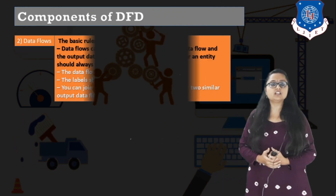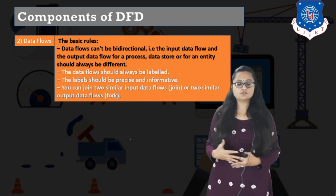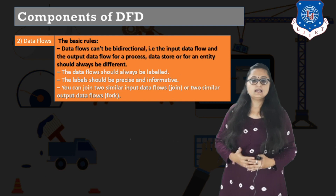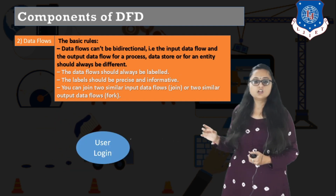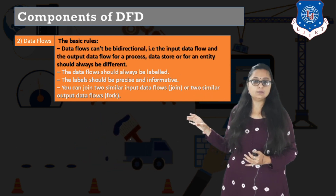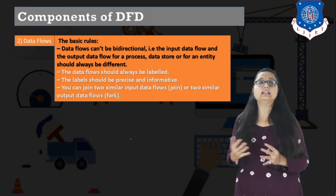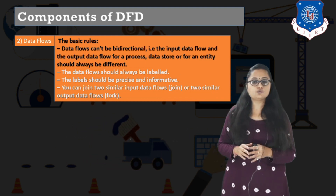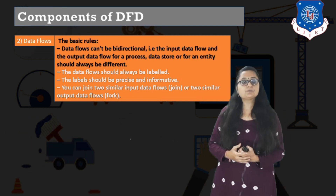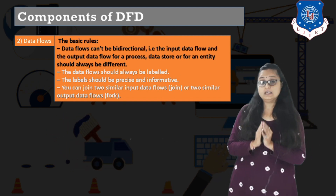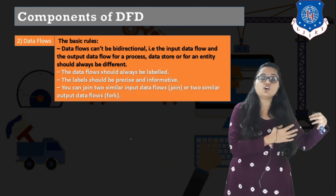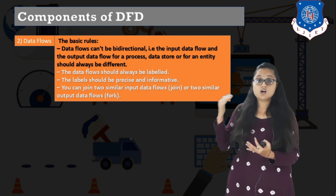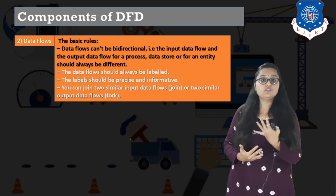The next component of DFD is data flow, because the name is data flow diagram. Data flows from external entity to process, or from process to external entity, and is depicted by an arrow symbol that should also be named. Rules for data flow: it cannot be bi-directional — you cannot show an arrow with two arrowheads. The input data flow and output data flow for a process should always be different. Labels should be precise and informative, depicting what sort of data is being entered or taken.